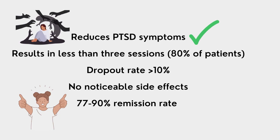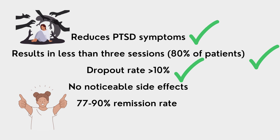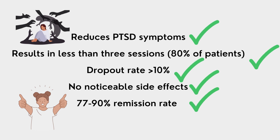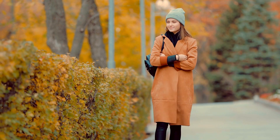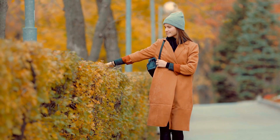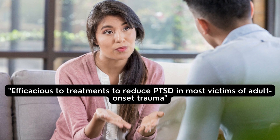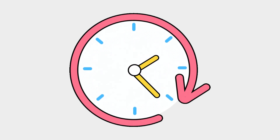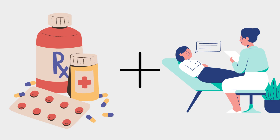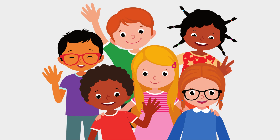EMDR has been shown in several controlled studies to reduce PTSD symptoms to the level of non-patient controls, with results seen in three sessions or less for more than 80% of patients, a dropout rate of less than 10%, and no noticeable side effects. Amazingly, controlled trials of EMDR for civilian PTSD report a 77 to 90% remission rate. The Psychological Association's Committee on Verified Treatments now proclaims EMDR as efficacious for civilian PTSD, and multiple randomized controlled trials have supported the efficacy of brief EMDR treatments. Future research should assess the impact of lengthier interventions, combination treatments of EMDR and medications like antidepressants, and treatments for the resolution of PTSD in adults with childhood-related traumas.